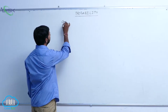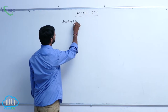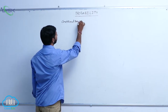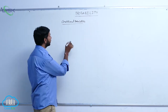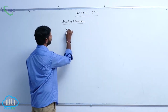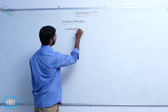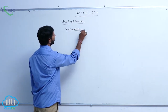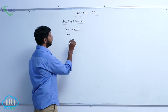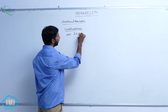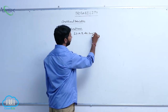What is conditional probability? In conditional probability, the first one is the conditional event. What is meant by conditional event? If capital A and capital B are two events in a sample space,